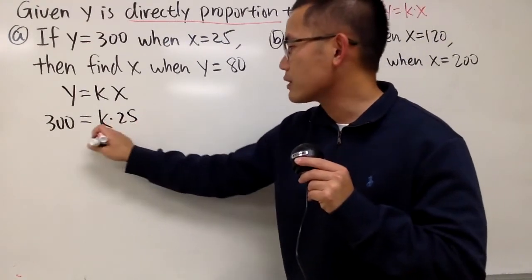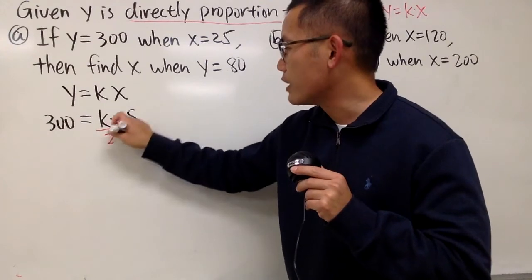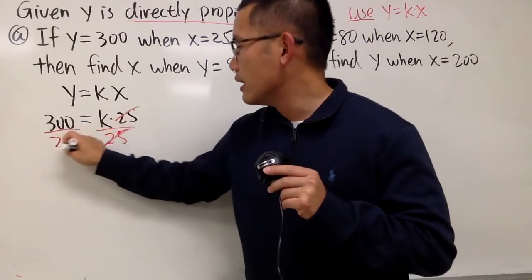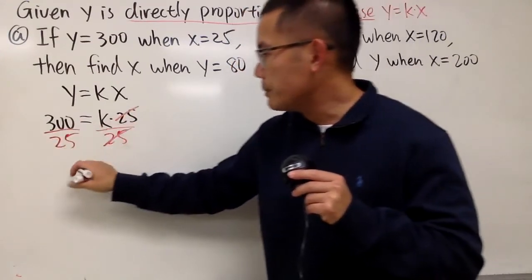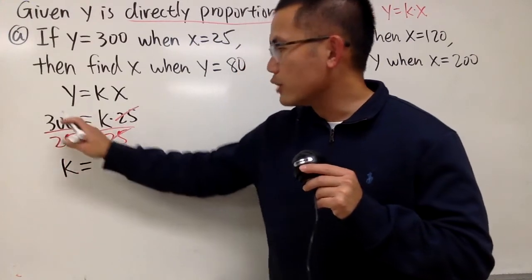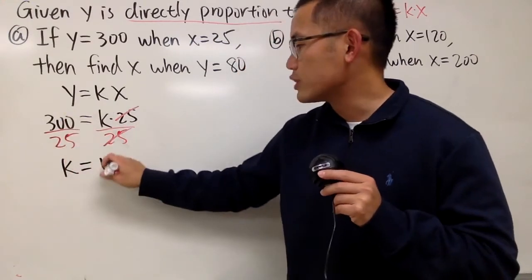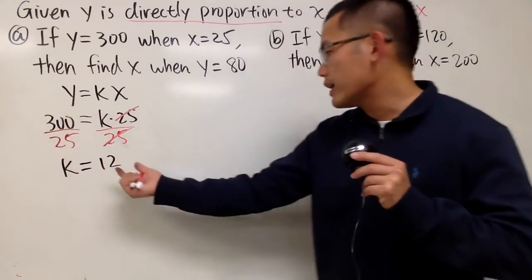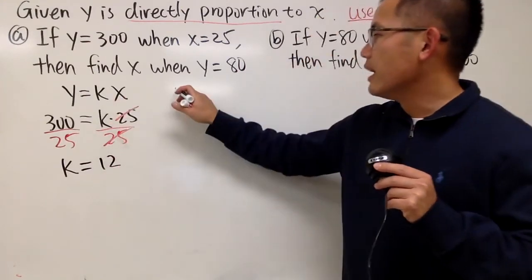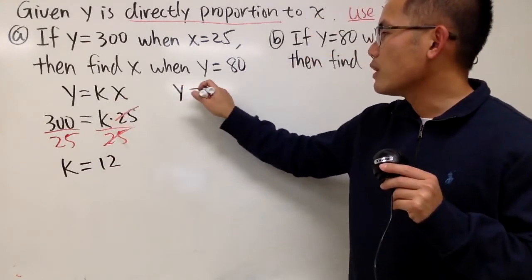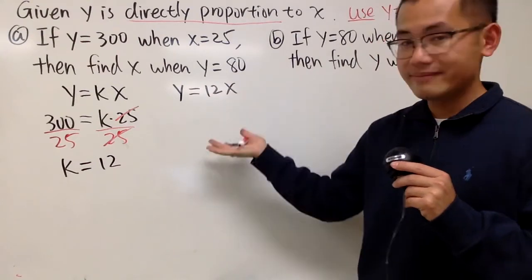This is k times 25, so let's go ahead and divide both sides by 25. So they will cancel like this. And then the k will be by itself, and 300 divided by 25 will end up with 12. So we can actually put this back to the k, and now the equation is y equals 12 times x, like this.